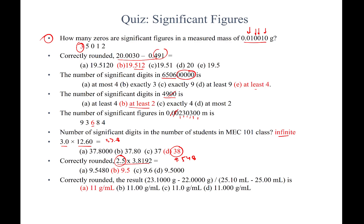For 2.5 × 3.8192: the calculator gives 9.548. Since 2.5 has only two significant figures, the final answer must have no more than two — dropping the 4 (less than 5) gives 9.5. The last quiz problem involves a mixed calculation: (23.1 g − 22 g) / (25.10 − 25.0). For the subtractions, apply the least-decimal-places rule; then for the division, apply the significant figures rule. Working through the calculation, the final answer comes out to 11.